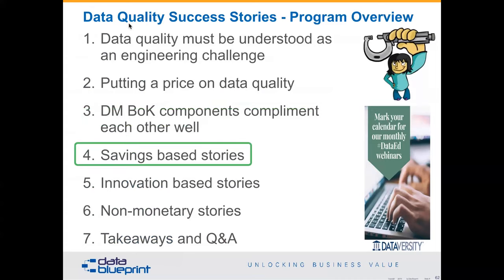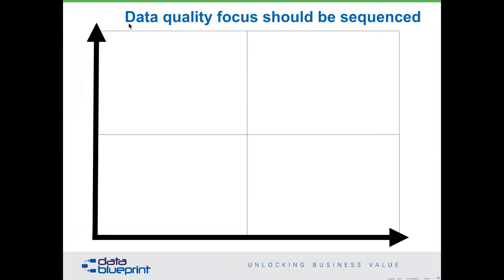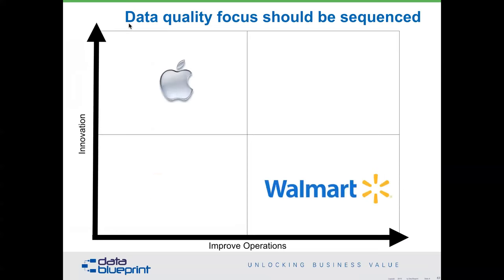Let's talk about a series of stories. The first set looks at improving operations within your existing company. There's also a component here for innovation. One of the things organizations get tripped up on is that they try to fix things — I've been with CEOs who say, 'Data quality caused that last problem, okay fine, so let's fix it. Can we be done by Friday?' And the answer is of course no. It doesn't work that way.